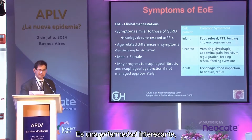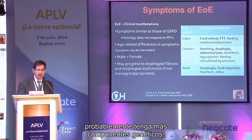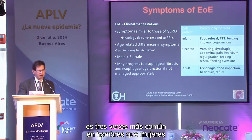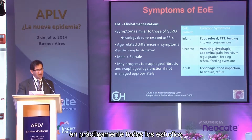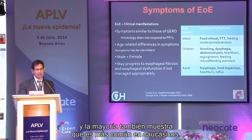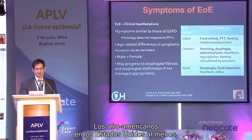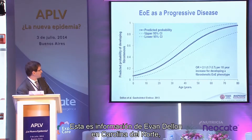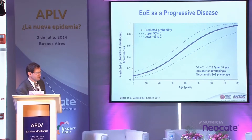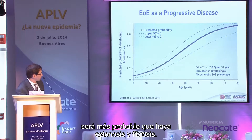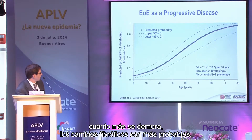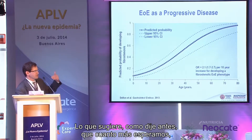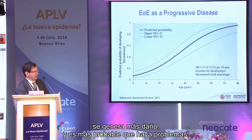EOE has a large genetic component — it is three times more common in males than females across almost every study, and it is much more common in Caucasians. African Americans in the United States appear to have a protective allele, and it is almost never seen in that population. Data from Evan Dellon in North Carolina shows that the longer you wait to diagnose, the more likely you are to have strictures and fibrotic changes.